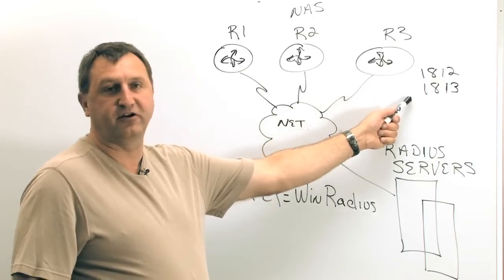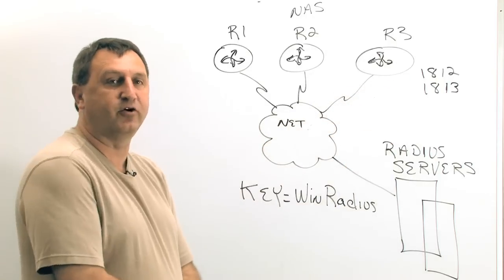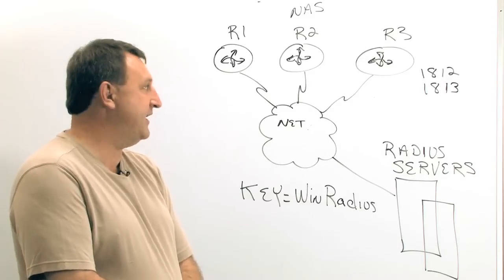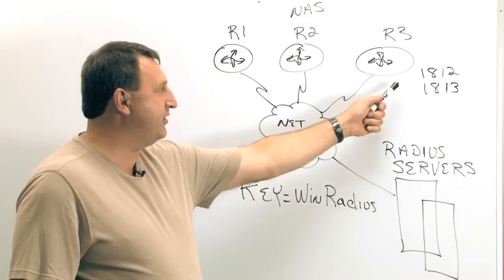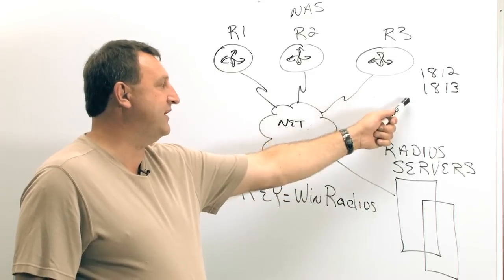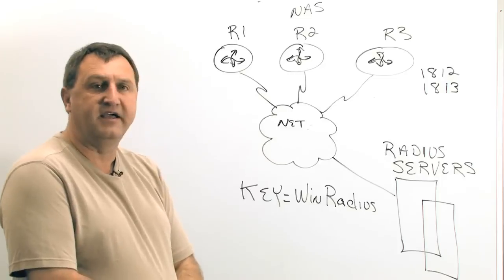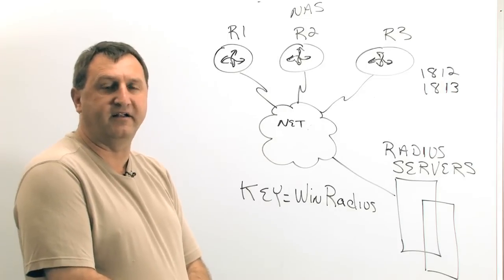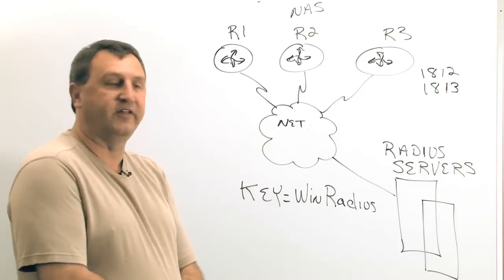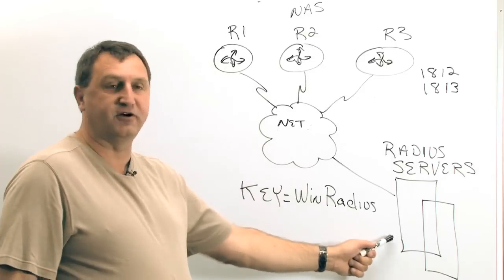The ports that RADIUS is going to use to answer the request and respond to the request for authentications. In our lab we're going to use ports 1812 and 1813. And then finally, we need to make sure that they all agree upon the same key, so that when the routers make a request to the servers...